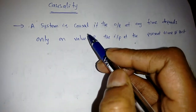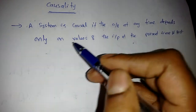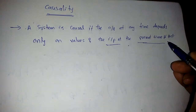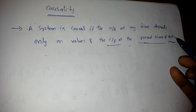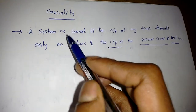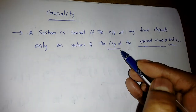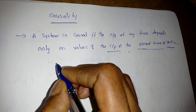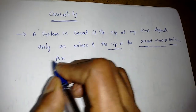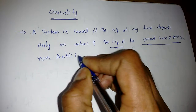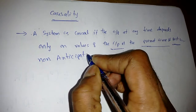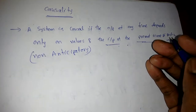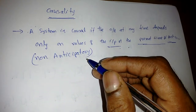A system is causal if the output at any time depends only on values of the input at the present time as well as the past time. Causality means the present output will depend on the present input as well as the past input. This is non-anticipatory — meaning we cannot anticipate the future values of the input to find the present output.